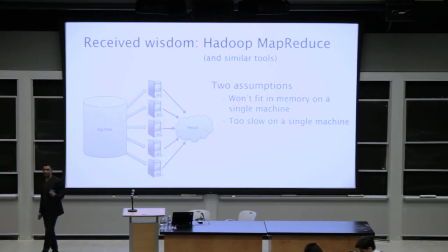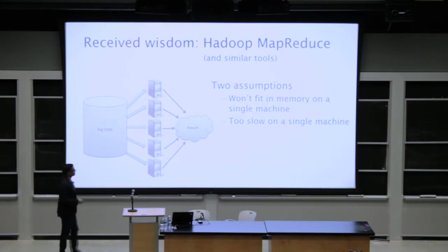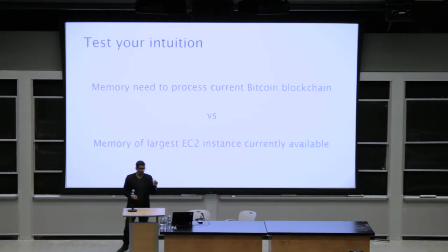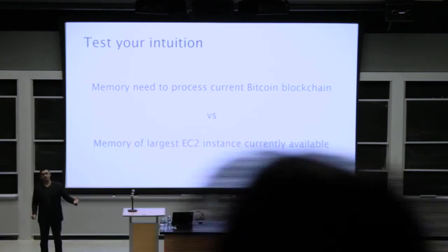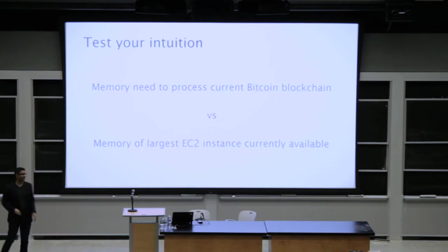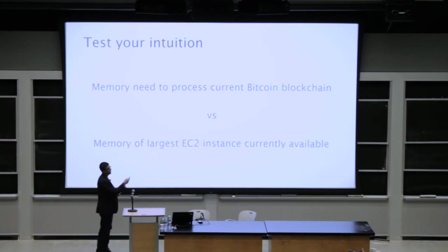Not a lot of people have thought critically about these two assumptions. For blockchain data, do we actually think it's not going to fit on a single machine? I'll give you a quiz — think about the amount of memory needed to process the Bitcoin blockchain as it exists today, and the amount of memory you can get out of a commodity EC2 instance from Amazon. When I ask my students this, they'll guess EC2 is maybe twice as big. But it turns out the EC2 instance is something like 100 to 200 times bigger.